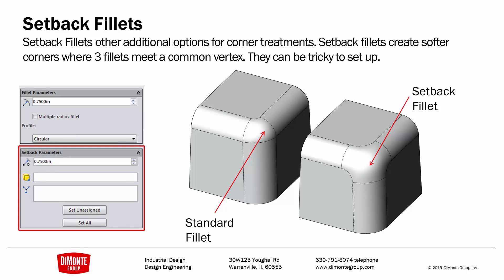Another option under the standard fillet is the Setback Fillet, which offers additional options for corner treatments. The Setback Fillet can create a softer kind of transition that might be more akin to sanding the shape in a wood block versus the standard fillet tool.